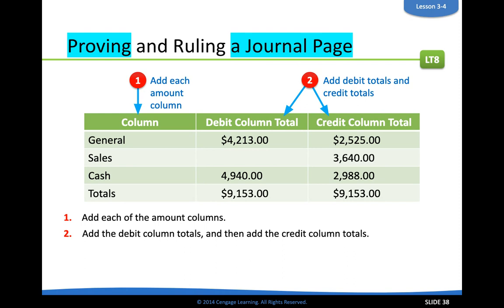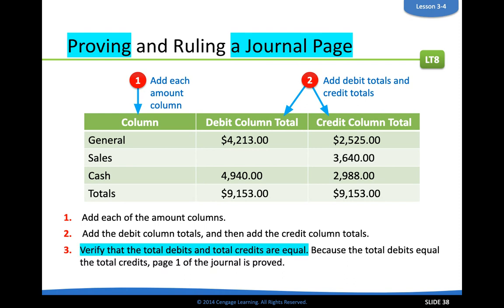We'll do all those steps today. Proving a journal is basically totaling all of the columns of your general column — the debits and the credits — total your sales credit column, and total cash debits and credits as well. Add them all up and then make sure that the debits and the credits equal each other.